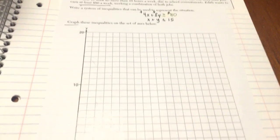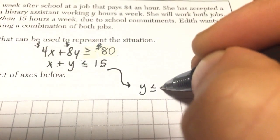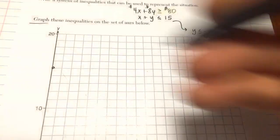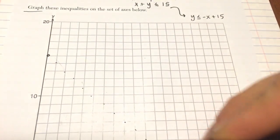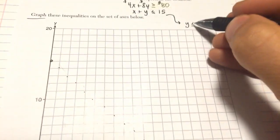Now I want to graph these inequalities on this grid. For the second inequality, if I move the x over by subtraction, you have this new inequality: y is less than or equal to negative x plus 15. So if I were to graph that, my y-intercept is 15. My slope is negative 1, so I'm going down 1 over 1.